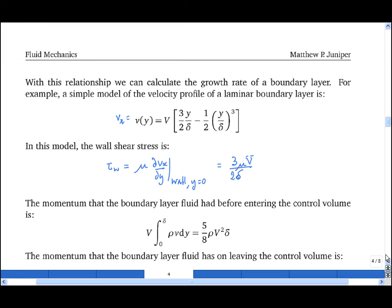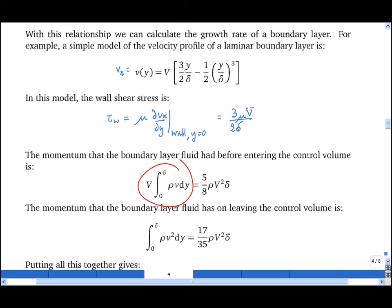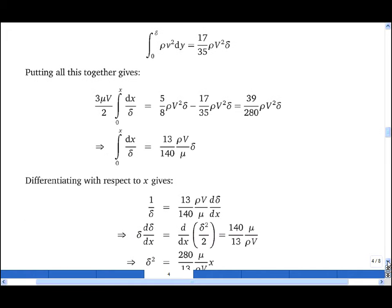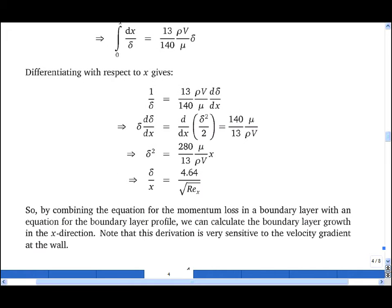The momentum that the boundary layer fluid had before entering the control volume, calculated for this velocity profile, is 5/8 rho V² delta. The momentum on exiting is 17/35 rho V² delta. Substituting these into the earlier expression and differentiating with respect to x gives an expression for delta over x — the boundary layer thickness divided by the distance from the leading edge — which grows with the square root of the Reynolds number defined as rho V x over mu. For this particular velocity profile, the numerator is 4.64, though that value depends on the velocity profile. It is worth noting that this derivation is very sensitive to the velocity gradient at the wall.